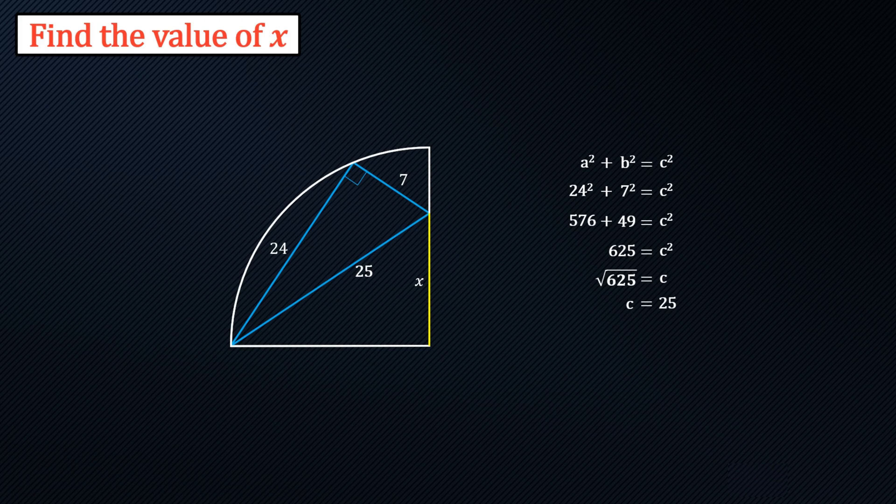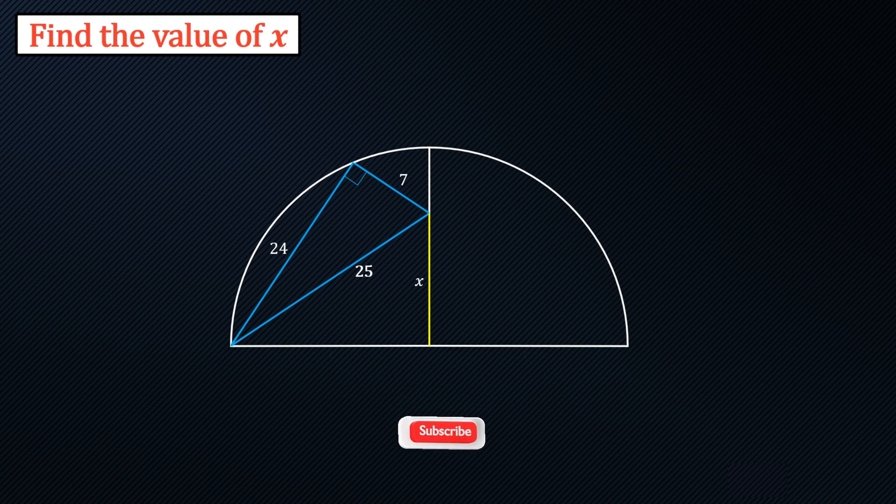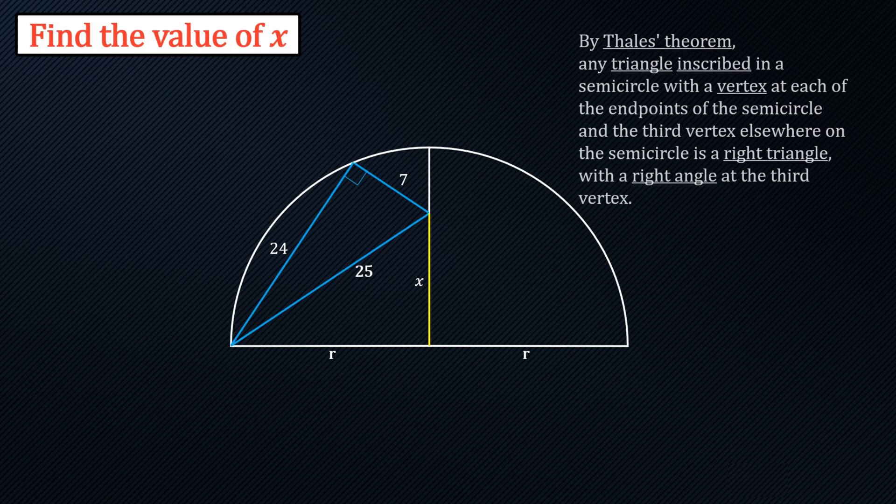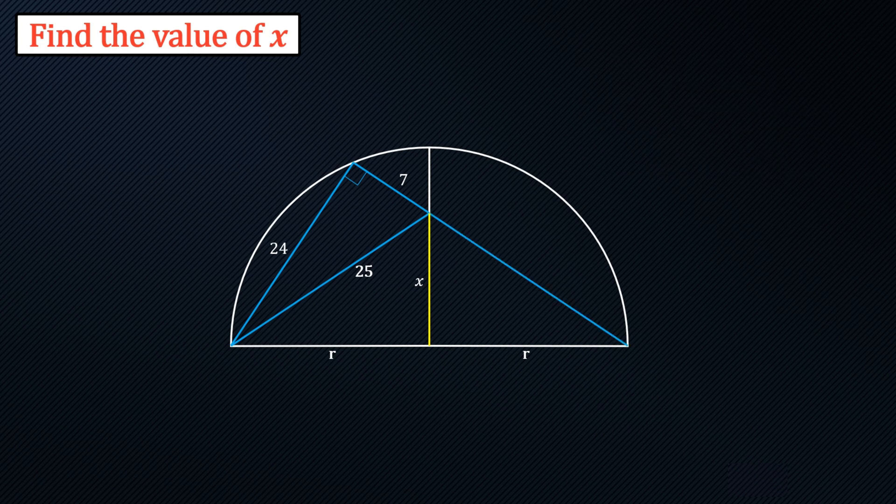There's a nice little trick here that if we actually consider this to be a half circle we can label the radii. What you may have noticed is that because we have a right angle on the circumference we actually have a right angle triangle inside a semicircle. We can extend the side length of seven right down to the bottom right corner of the semicircle.